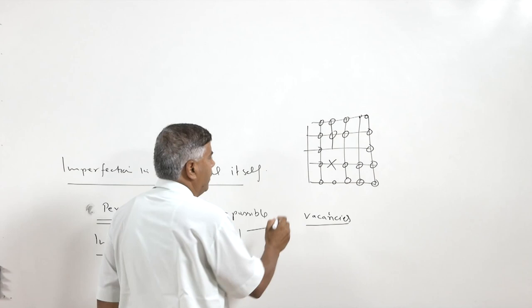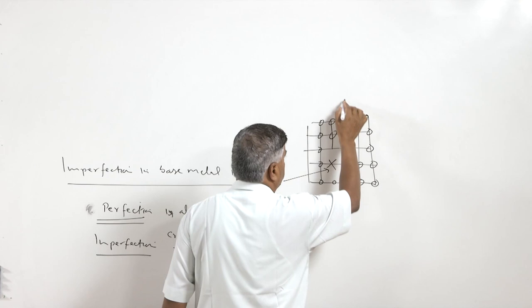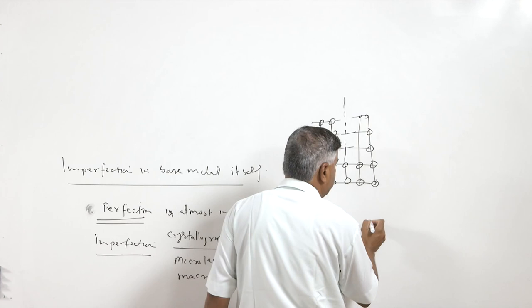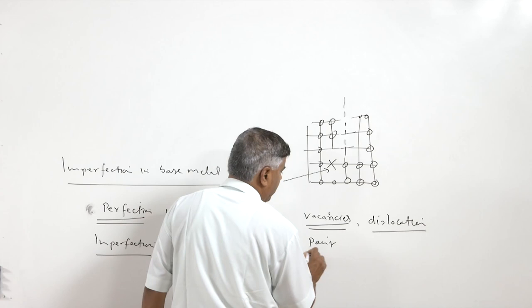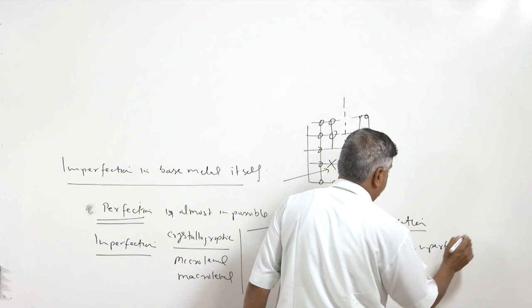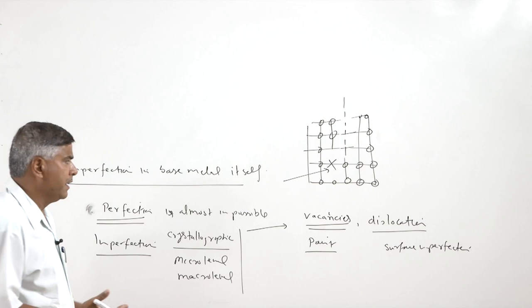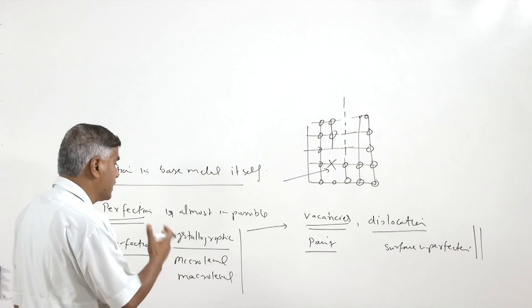A vacancy is the location where an atom is missing. Similarly, if one complete plane of atoms is missing, it is termed a dislocation. The vacancy is termed a point imperfection and the dislocation is termed a surface imperfection. We also have other volumetric imperfections, but these imperfections do not deteriorate mechanical properties as significantly as micro-level imperfections.